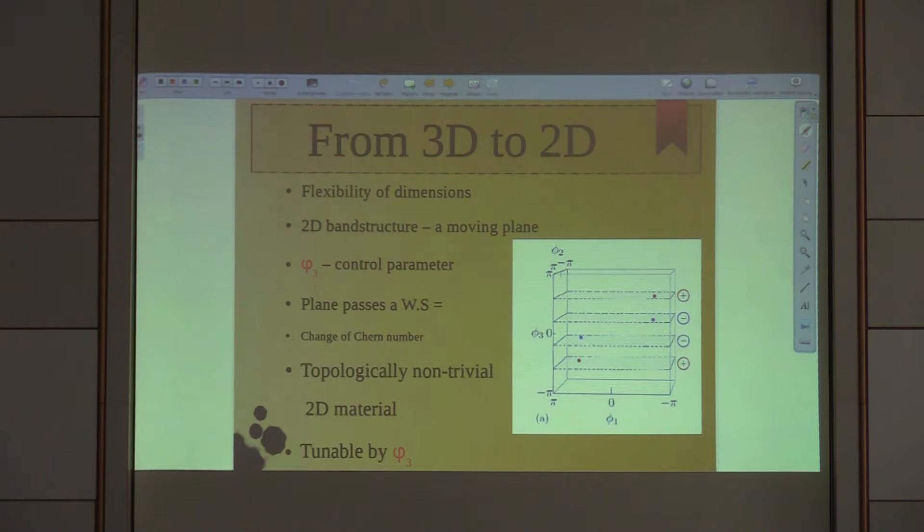So I have two-dimensional slices spanned by phases one and two. I can eventually calculate Chern number in this two-dimensional base structure and it appears to be non-trivial. Any time a plane moving in this direction crosses a Weyl singularity, Chern number jumps by one.